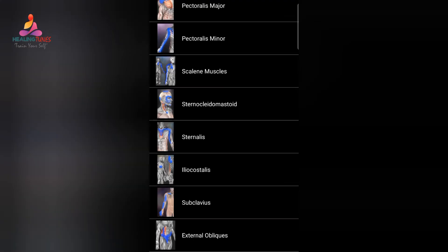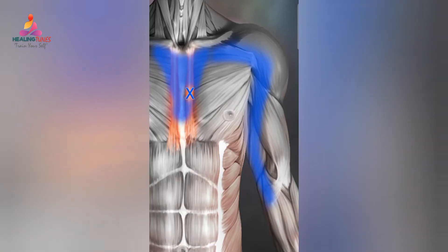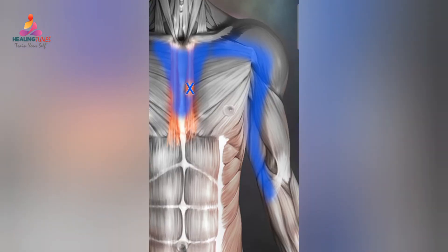Next muscle is the sternalis. It produces intense deep sub-sternal pain and occasionally soreness over the sternum. It is a vestigial muscle and a possible continuation of the rectus abdominis.